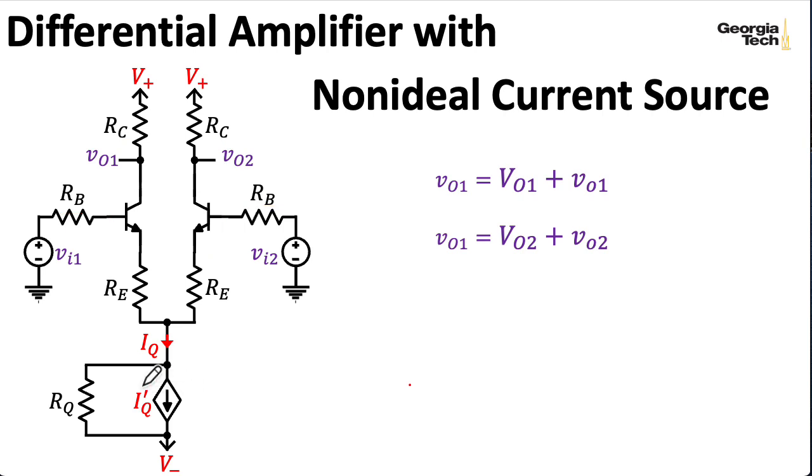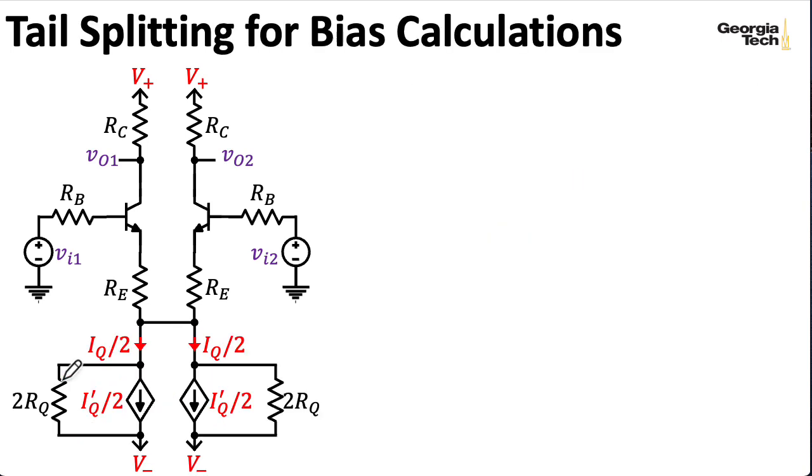To exploit the underlying symmetry, I'm going to take this IQ prime current source and split it into two parallel current sources with half the current, and I'm going to take RQ and split it into two parallel resistors, each with twice the resistance. So I can rewrite the circuit like this, which allows me to take advantage of the symmetry.